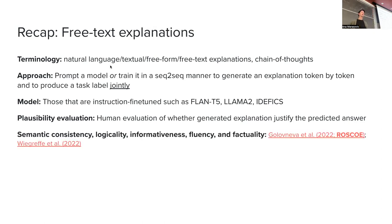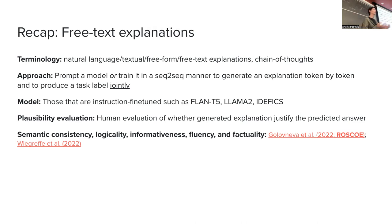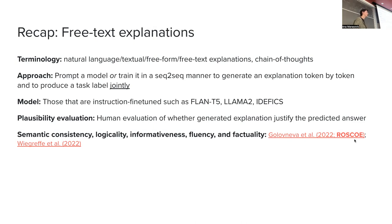Plausibility is an overall judgment of acceptability of the explanation — it can be vague, focusing on factuality, style, etc. It might be better to have fine-grained categories such as: is the explanation consistent, coherent, logically sound, informative, fluent, and factual? We could have different metrics for different aspects of the generated explanation. One suite of metrics for measuring this was presented as Roscoe, which is designed more for step-by-step reasoning with logical kinds of reasoning.